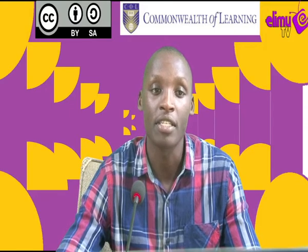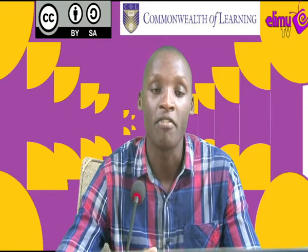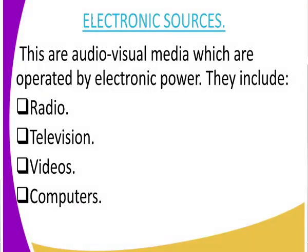For example, on television we always watch news and see live coverages. Those are visual media. We also have audio-visual media — for example, the television, where you get to hear the sound and also see the person. That is what is meant by audio-visual media.